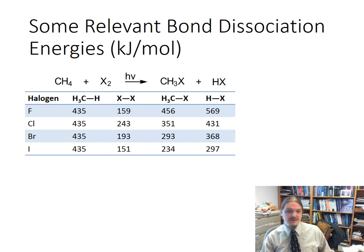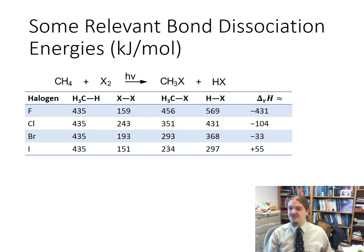And if we were to take these bond dissociation energies and use them to estimate the enthalpy change of the reaction, we'd get these values that I have listed over here on the far right. And we do that by adding the bond dissociation energies of the reactants and subtracting the bond dissociation energies of the products. So it takes energy input to break the bonds in the reactants, and then we get energy back out when we form the products.